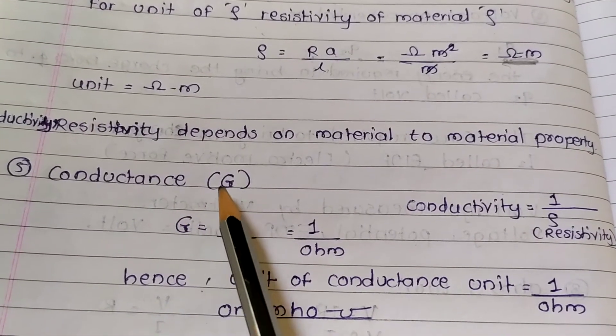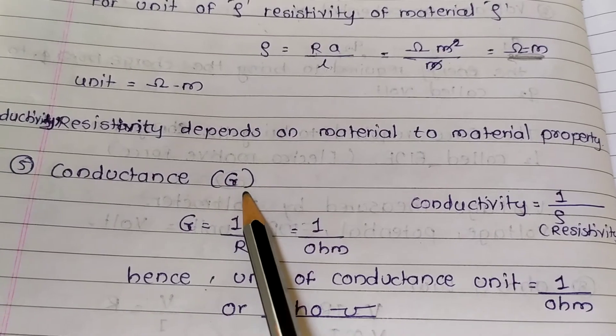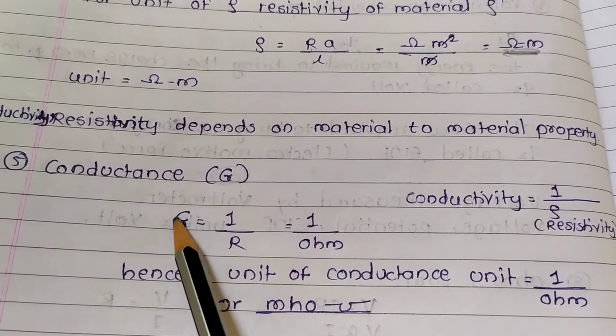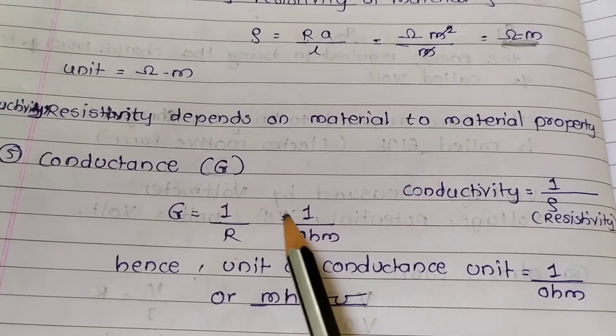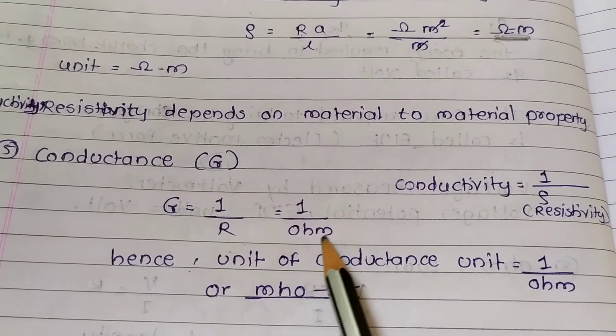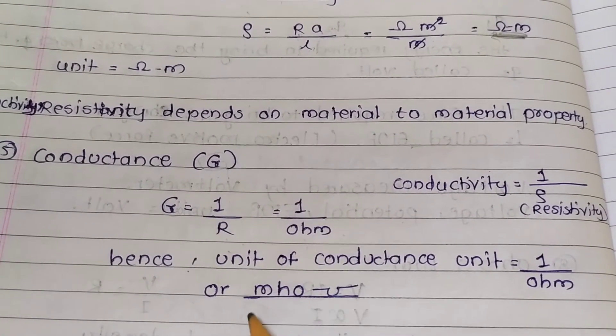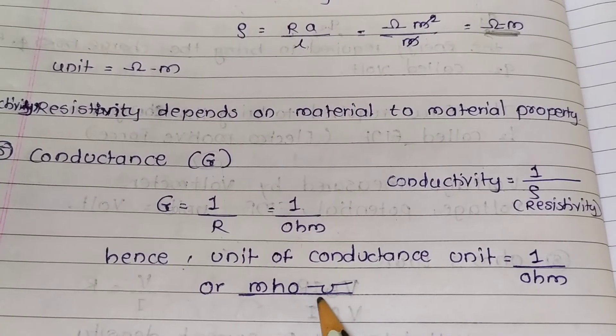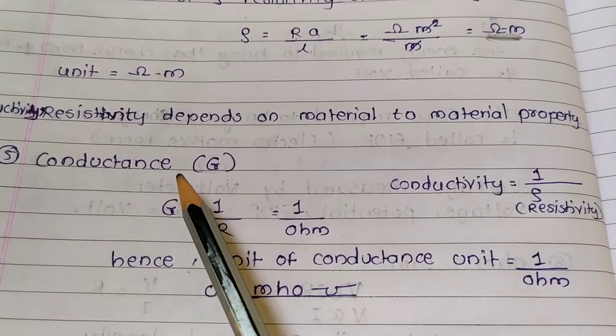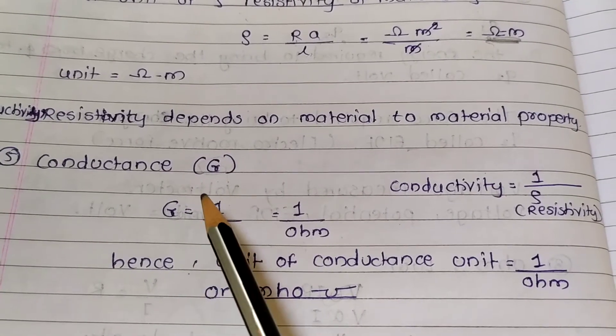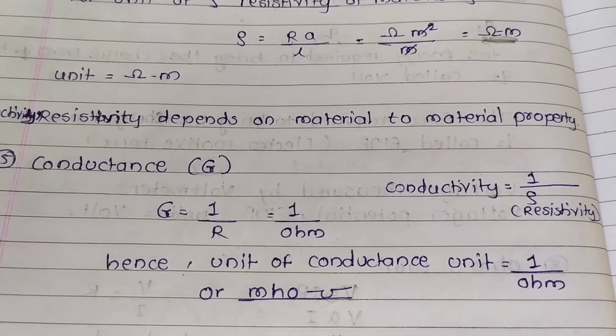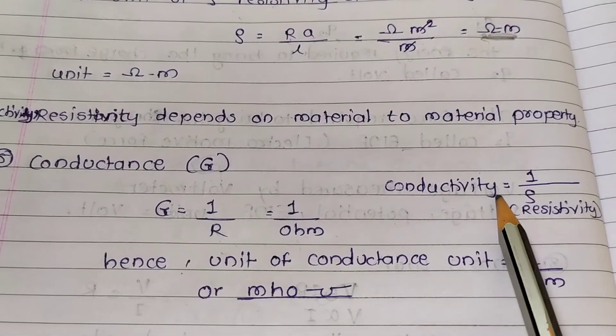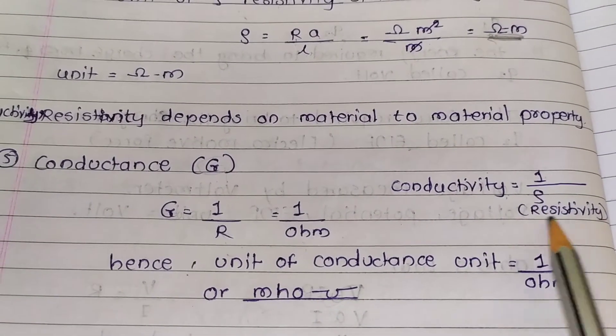Now conductance, denoted by G. G = 1/R, one by resistance. Hence its unit is 1/ohm or mho. Conductance and resistance have this relation. Conductivity and resistivity also same relation. Conductivity = 1/resistivity.